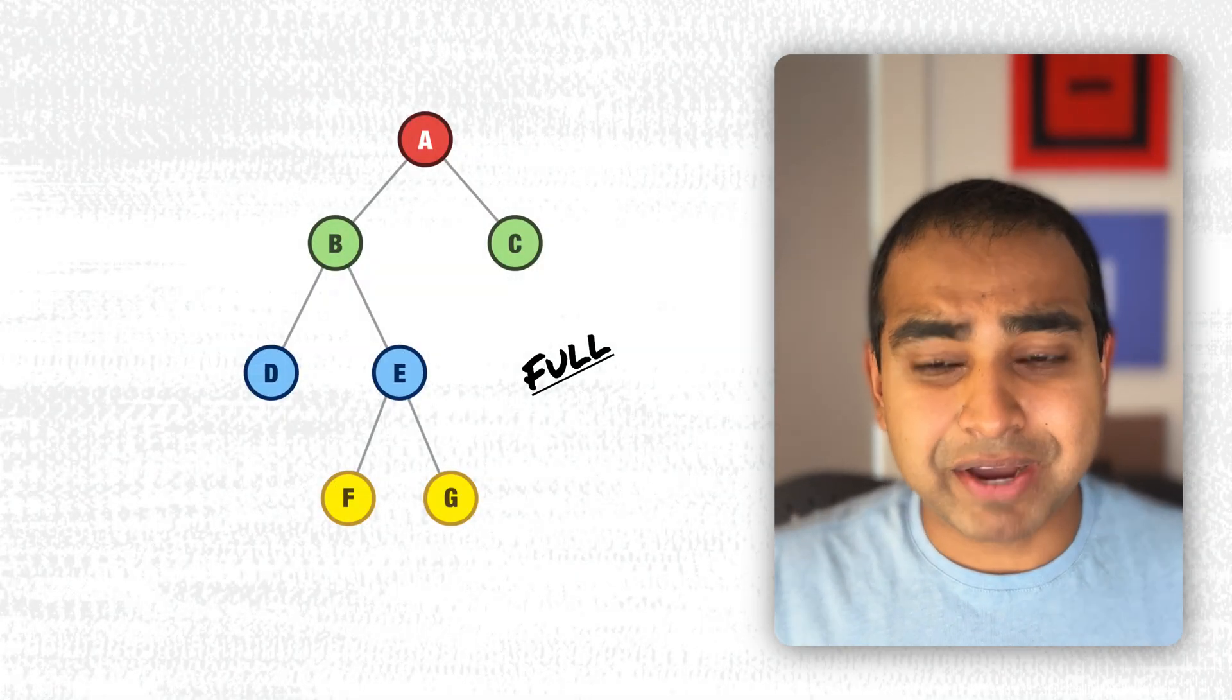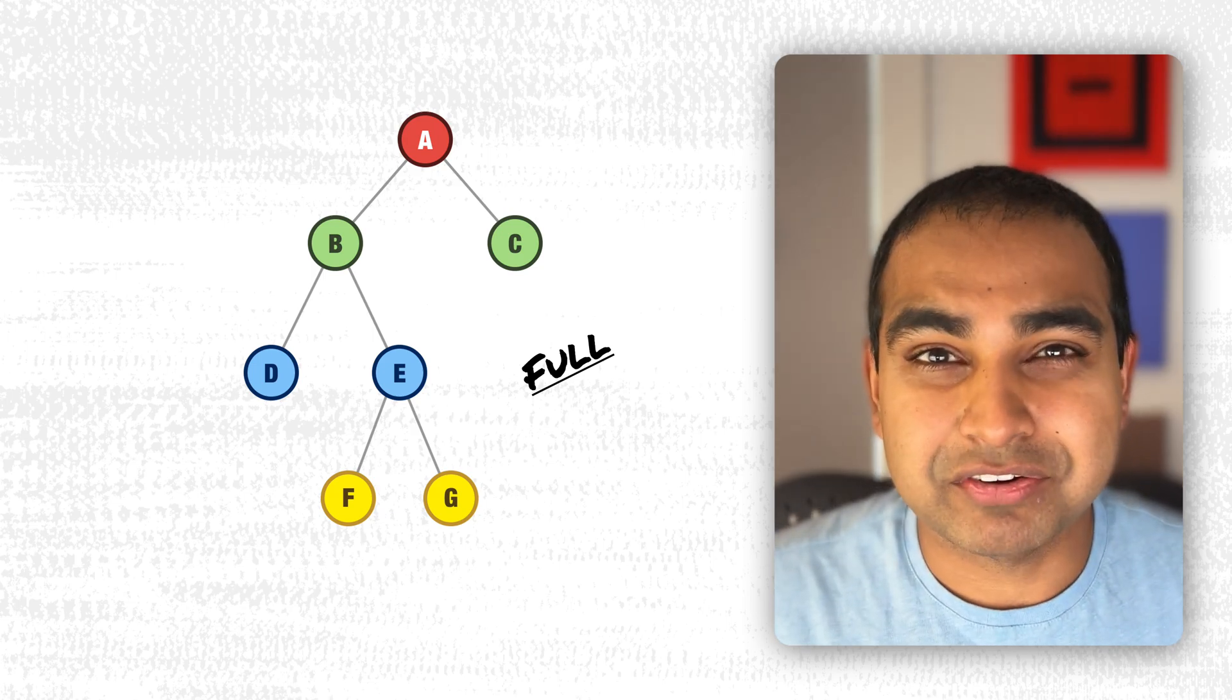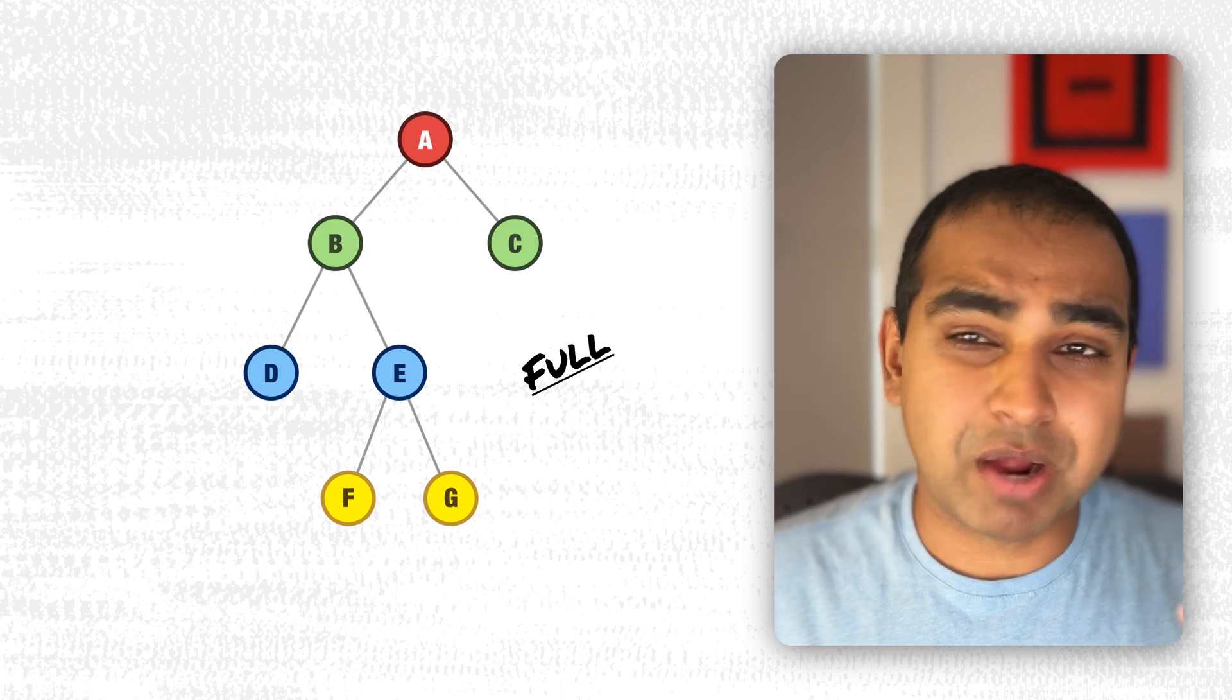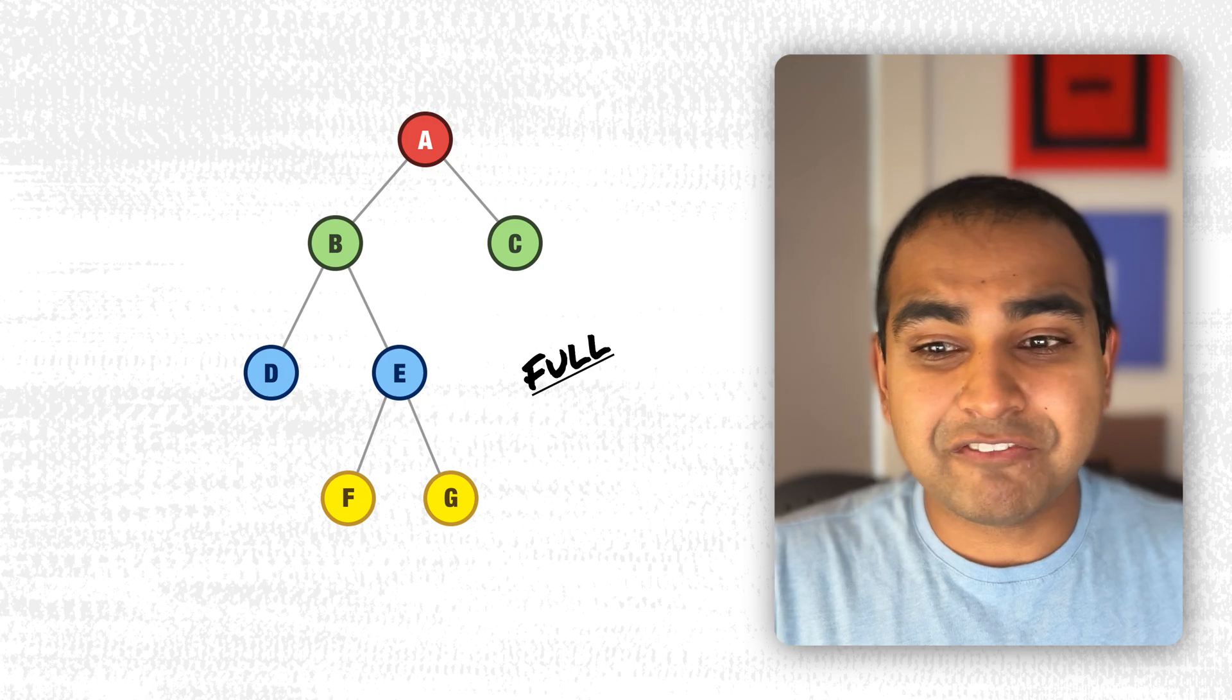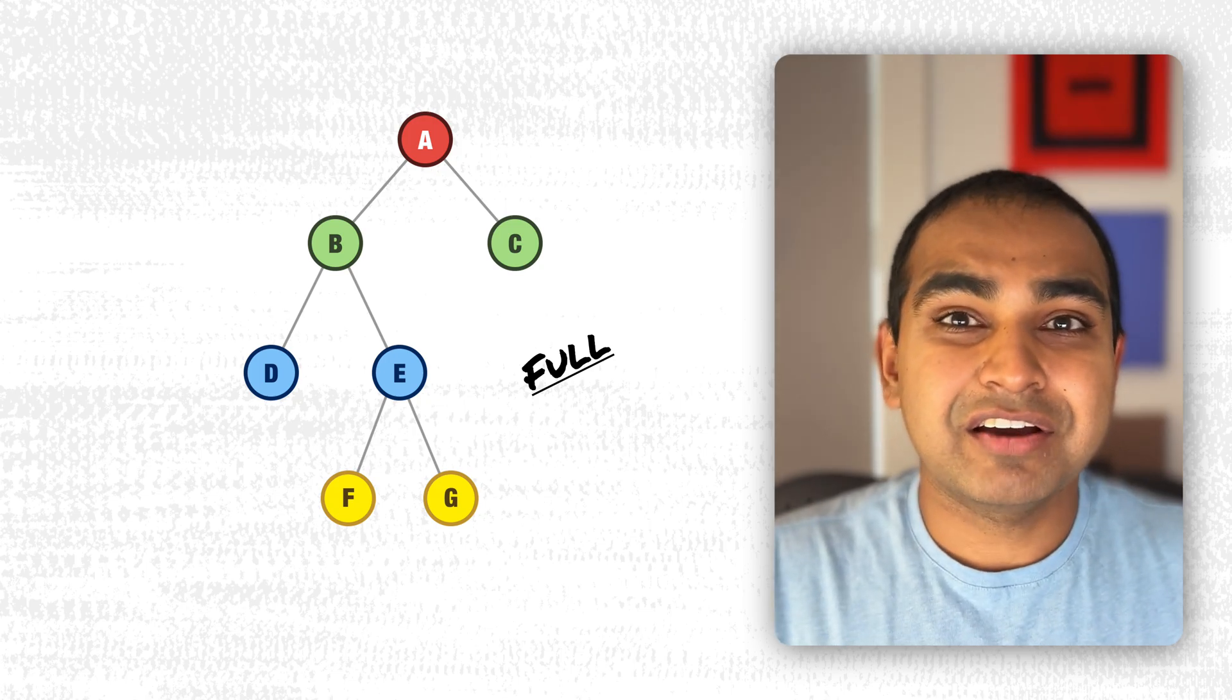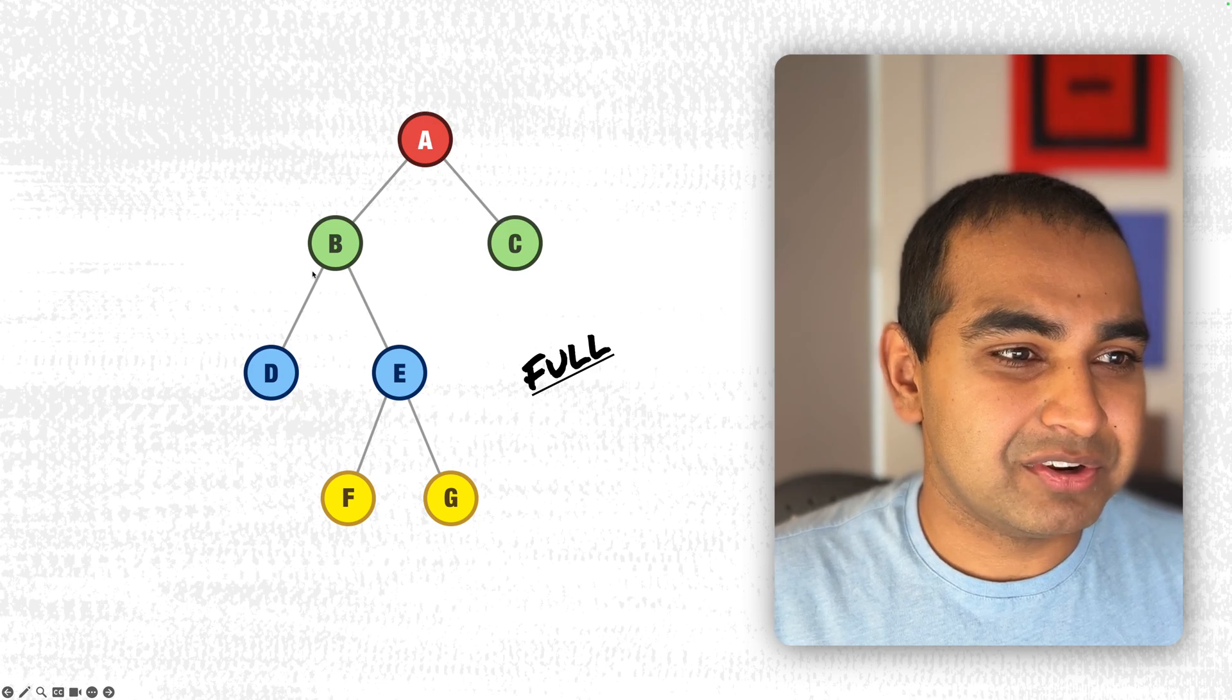The first one is known as a full binary tree, also known as a strict binary tree or proper binary tree. What this means is that every non-leaf node has a full two children on it. You can see that here - A is the root node and has B and C, full children.